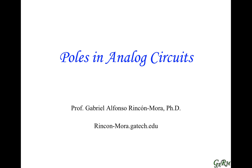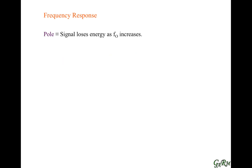This video is on poles in analog circuits. A pole refers to when a signal loses energy as frequency increases — in other words, when the signal decreases as frequency rises.